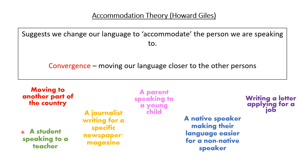Here we have a student speaking to a teacher — if you're speaking to a teacher or lecturer you're likely to converge and speak in a more formal and perhaps more adult manner than you do when speaking with your peers. For a written example, if we think about the Sun newspaper, which is known to be written in a style that can be understood by those with a reading age of eight, a journalist writing for the Sun would change their language to converge to the target audience. Similarly, if you were an adult writing for a teenage magazine you would do something along the same lines.